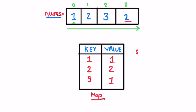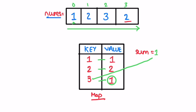We declare a variable sum, initialized to 0. Now we iterate through the entries inside the map. Unique elements have a count equal to 1, so we check for keys whose value equals 1. The first entry has value 1, so we add its key (1) to sum — sum is now 1. The second entry has value 2, so it's not unique; we skip it. The third entry has value 1, so it's unique — we add its key (3) to sum: 1 + 3 = 4. We've reached the end of the map and the final answer, 4, is stored in sum.